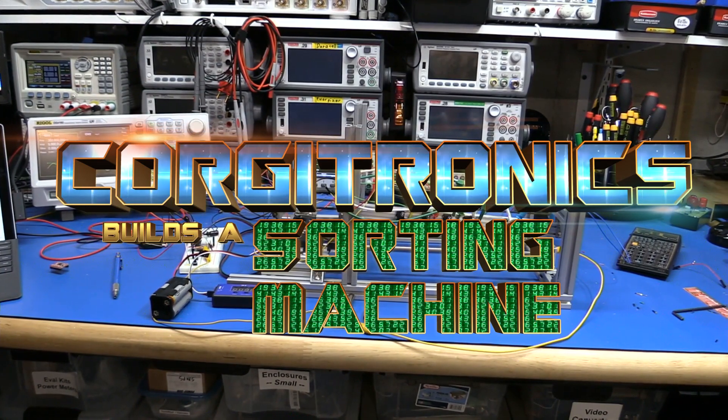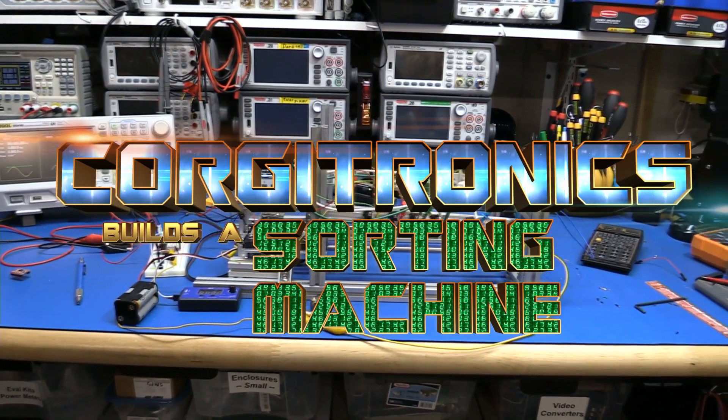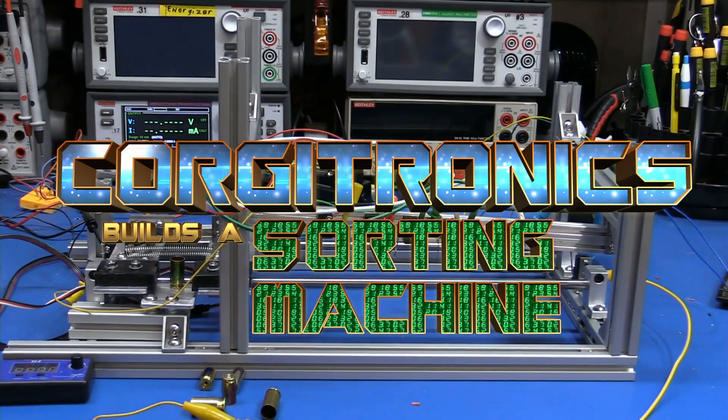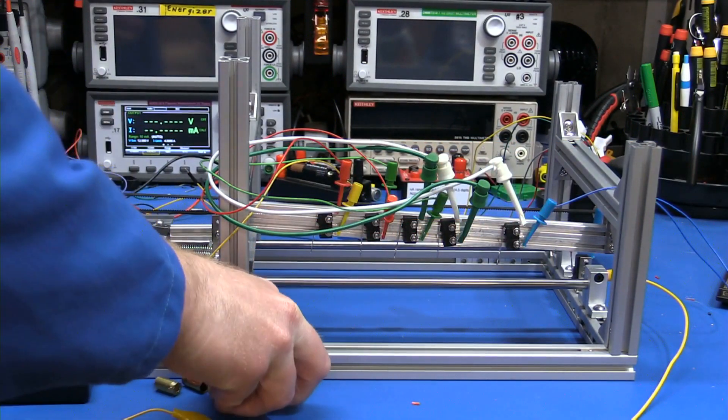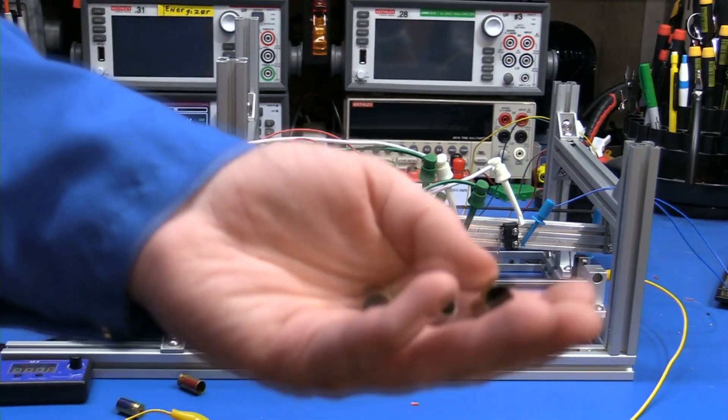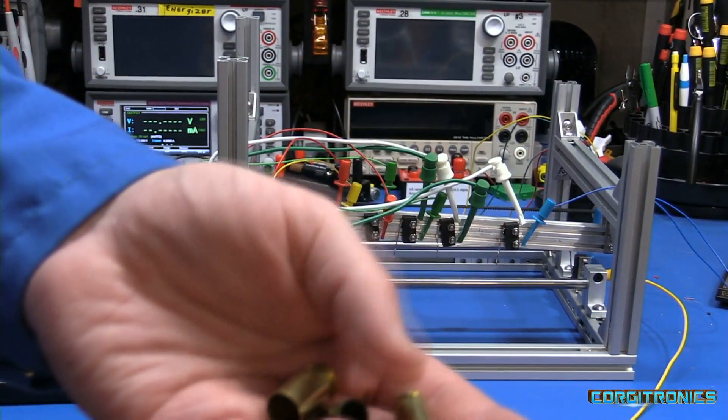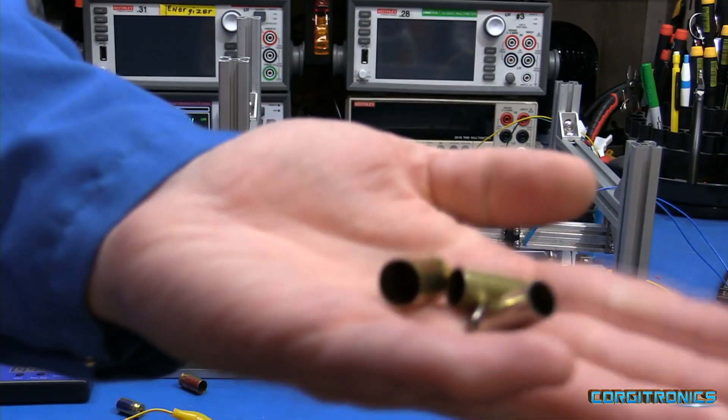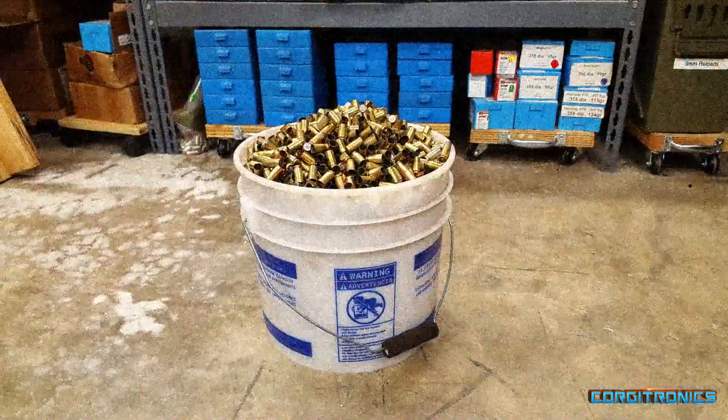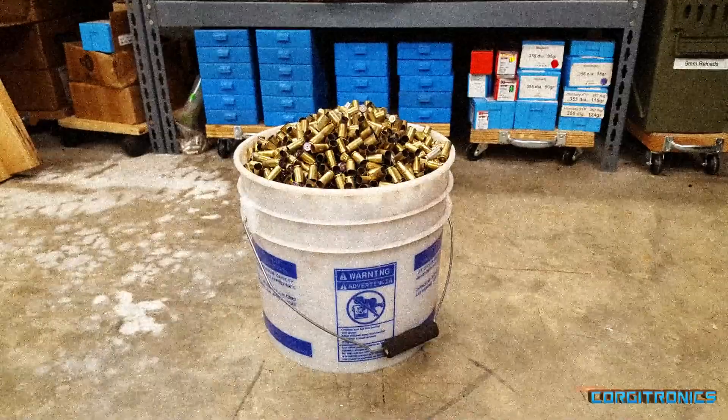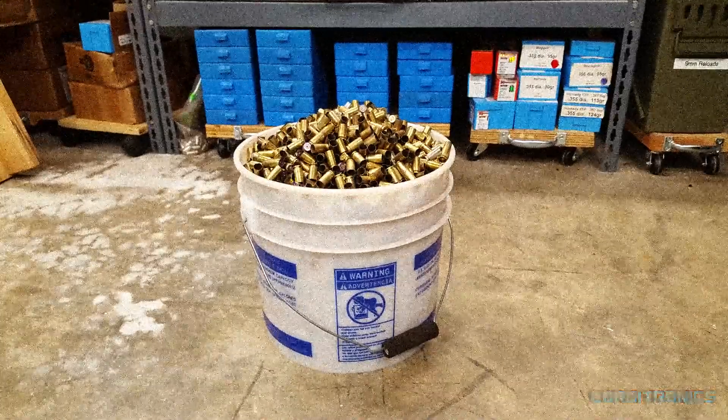Well, what do we have out on the bench today? This time it's a little bit different. What we have today is a prototype of a machine to sort brass cartridge cases by size. And why would I want to have something that did that? Well, I have this giant bucket of brass and I really don't want to sort through it by hand.